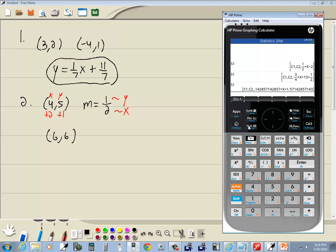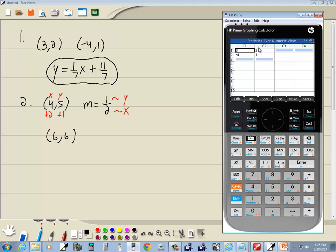We can use the same technique we just looked at in the first example. So I'll come back here, go back to my num. I'm going to put my x values in C1, y values in C2. So I'll do 4 enter, 6 enter. Right arrow over. And I'll put 5 enter, 6 enter. You should see your points. See how we have 4, 5, 6, 6.